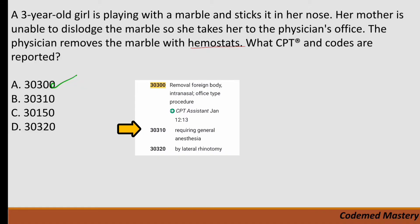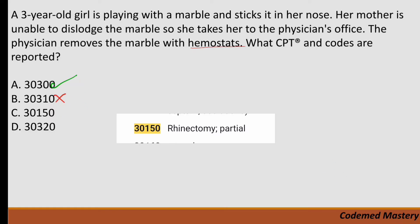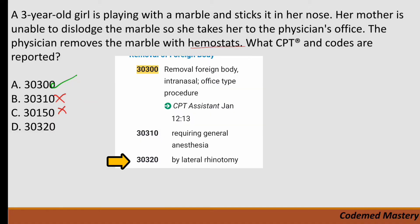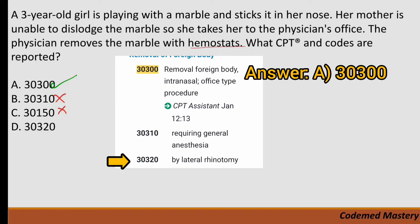Option B, 30310, is for removal of foreign body intranasal requiring general anesthesia, but the question does not mention general anesthesia, so we eliminate it. Option C, 30150, is for rhinectomy partial — rhinectomy is not performed here, so we eliminate it. Option D, 30320, is for removal of foreign body intranasal by lateral rhinotomy — lateral rhinotomy is not mentioned, and the procedure was done in the office. So the correct code is 30300, removal of foreign body intranasal, office-type procedure.